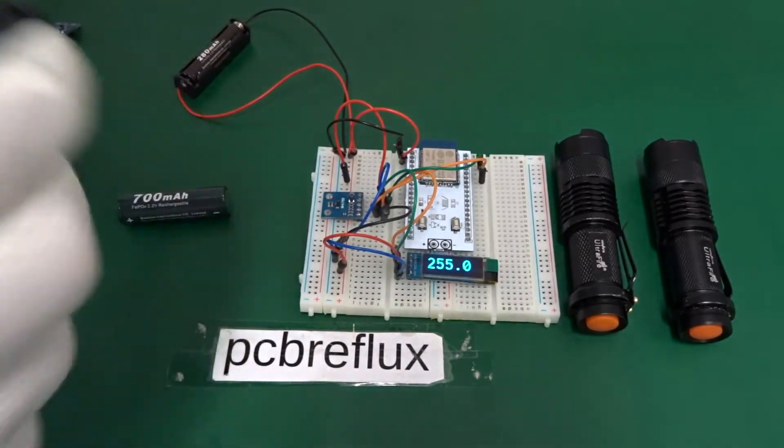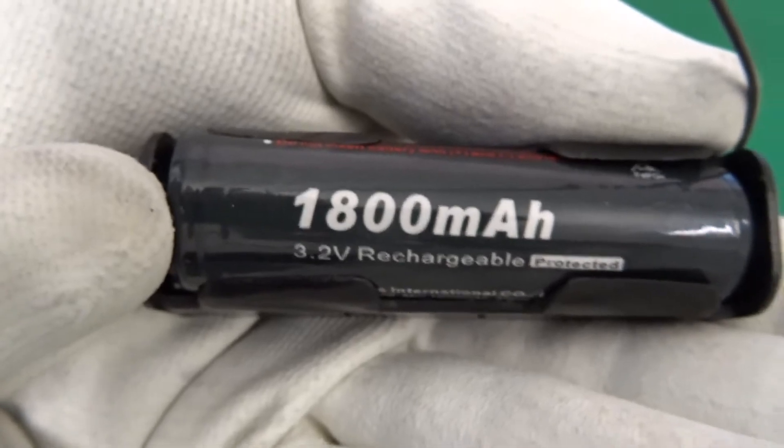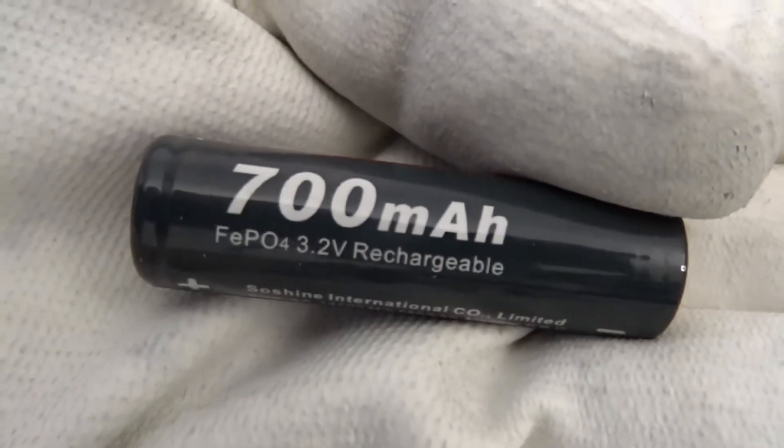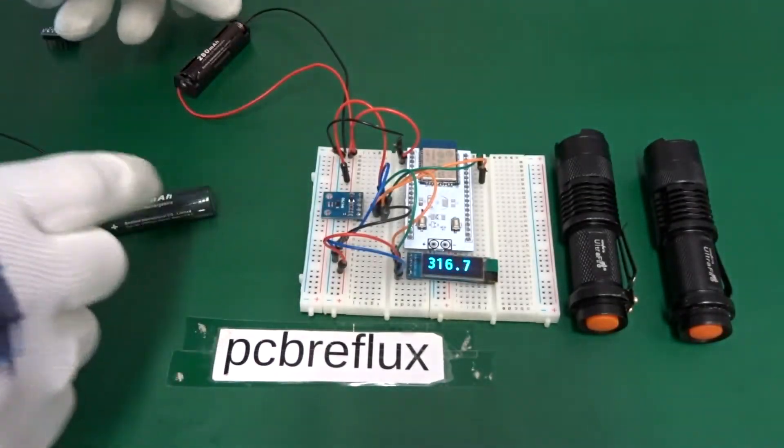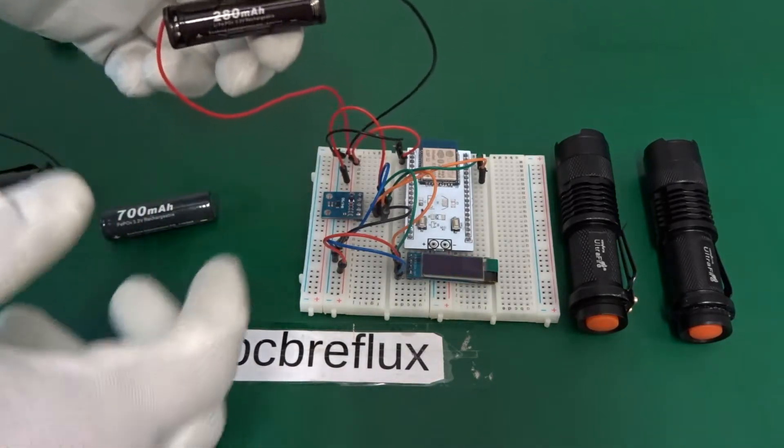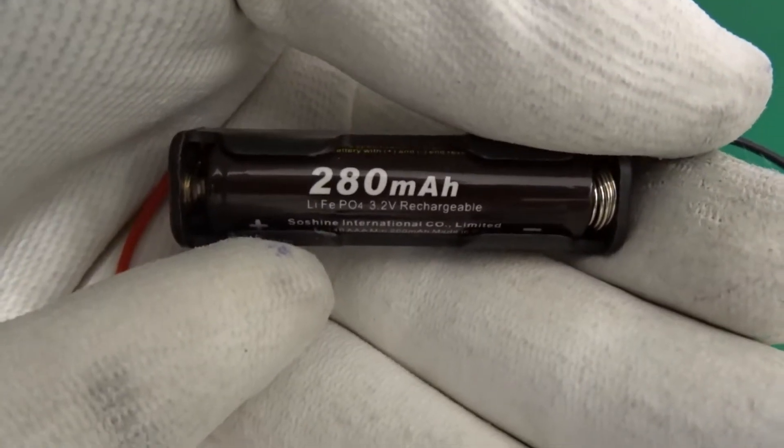And here are the LiFePo4 batteries. First the big one in the 18650 size. Then we have here the medium size or AA with 700 milliampere hours, and a very small one in a AAA form factor. It's only 280 milliampere hours.